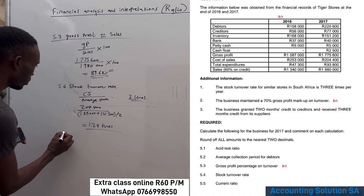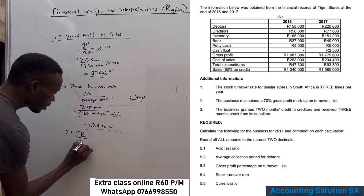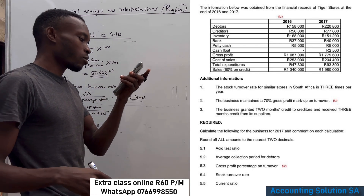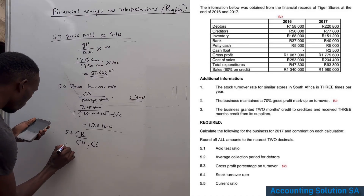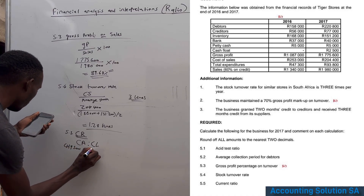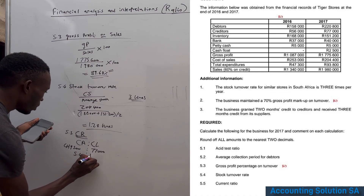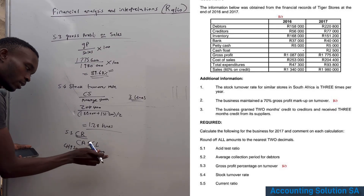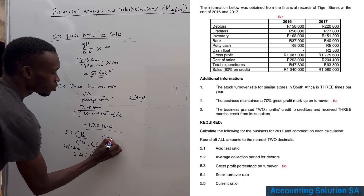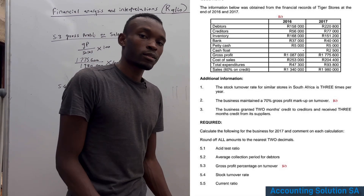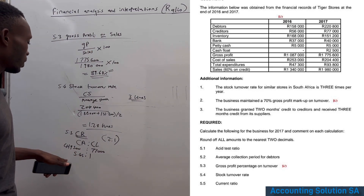Question 5.5 is the current ratio, which is similar to the acid test ratio. The formula is current assets to current liabilities. Current assets total 419,500 and current liabilities are 77,000. Dividing gives 5.45:1. The norm is 2:1, so at 5.45 we have significantly more assets than liabilities — this ratio looks very good.